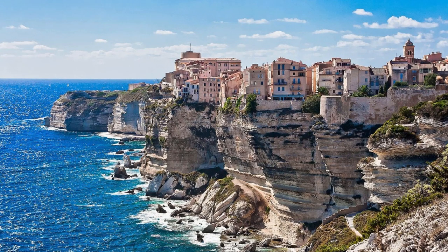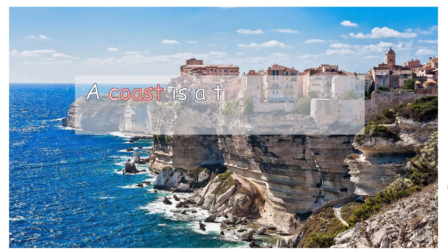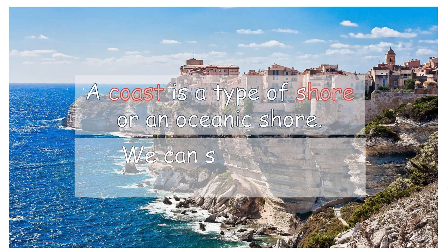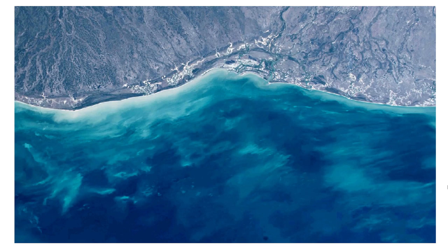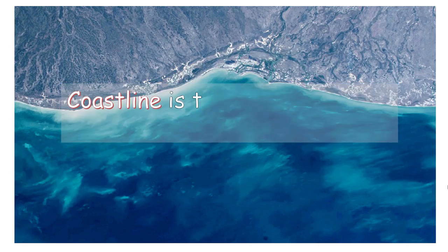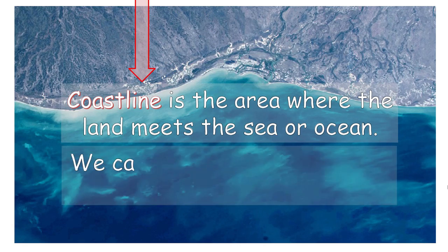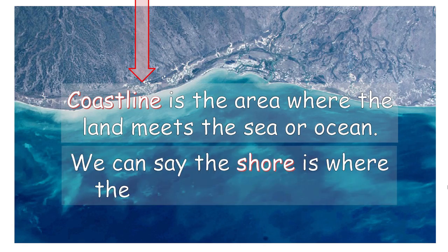Coasts and shores. A coast is a type of shore or an oceanic shore. We can say a coast borders an ocean. Coastline is the area where the land meets the sea or ocean. We can say the shore is where the water meets the land.